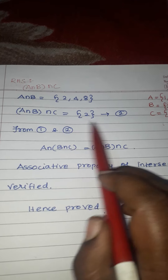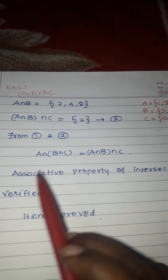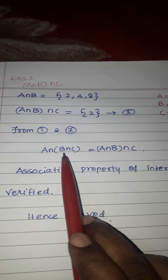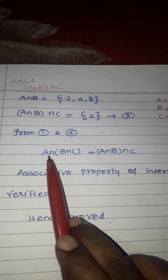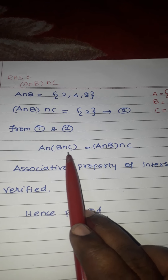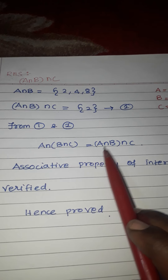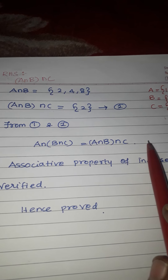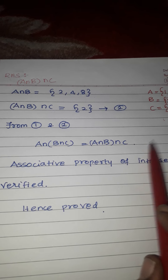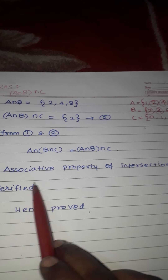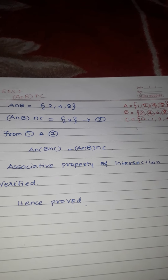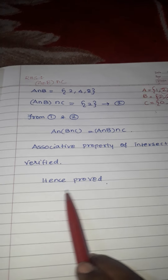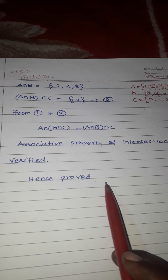So from equation 1 and equation 2, A∩(B∩C) equals (A∩B)∩C, both equal to {2}. Therefore the associative property of intersection of sets is verified and proved.